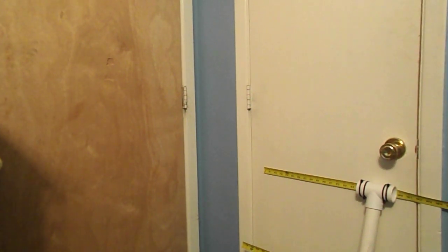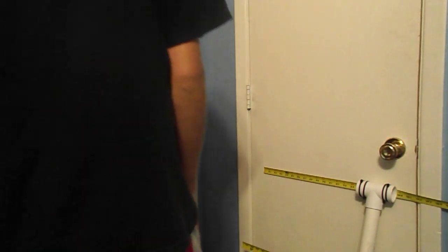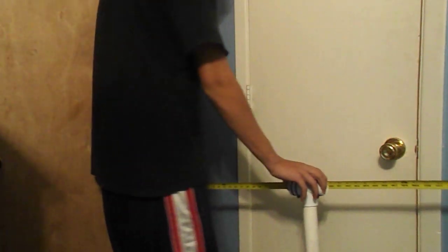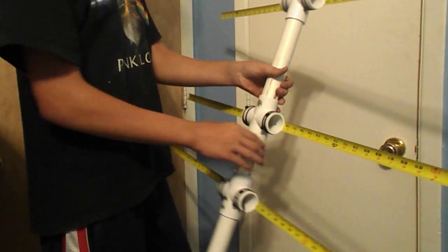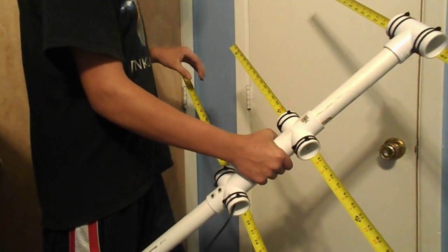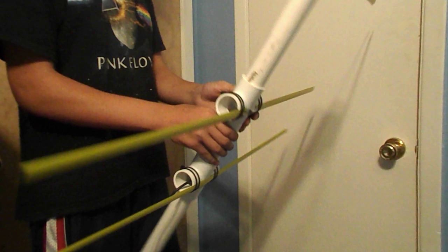Hey guys, KF5MWX here, and I'm going to be showing you my homemade 2 meter Yagi directional antenna that I made just today, made completely out of PVC and measuring tape, zip ties.